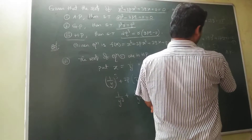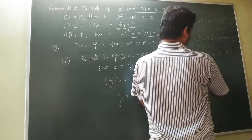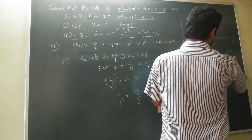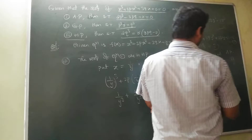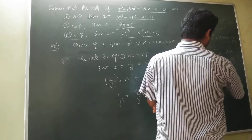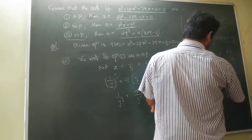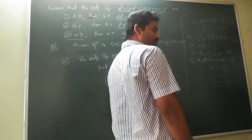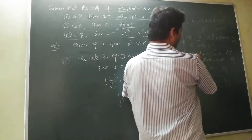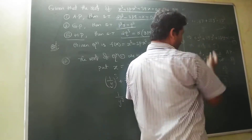Take the AP roots as (A minus d), A, (A plus d). What is S1 equal to? (A minus d) plus A plus (A plus d) equal to minus 3Q by R. The d terms cancel, so 3A equal to minus 3Q by R, therefore A equal to minus Q by R. So A equal to minus Q/R is a root of equation 2.